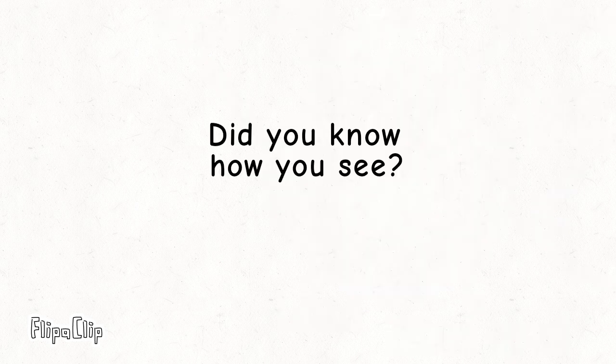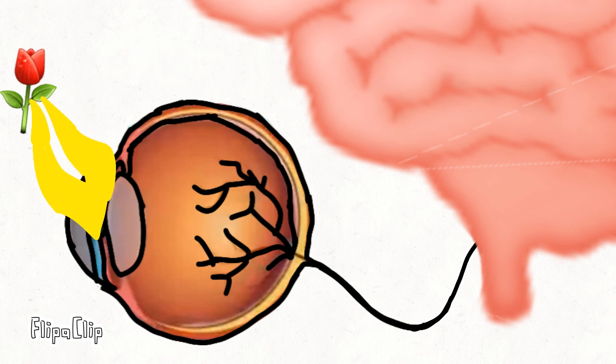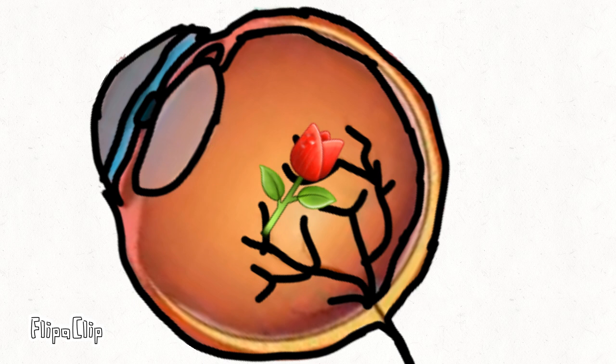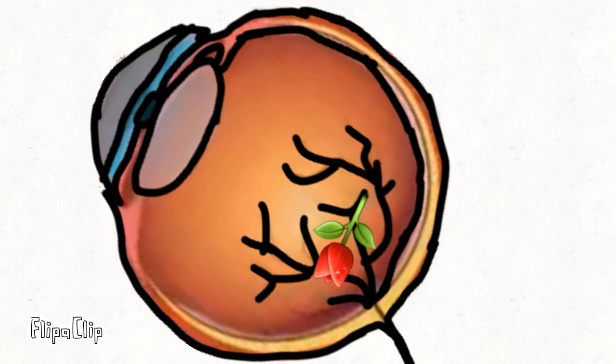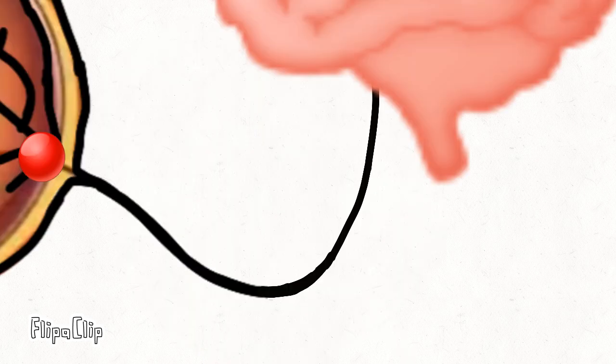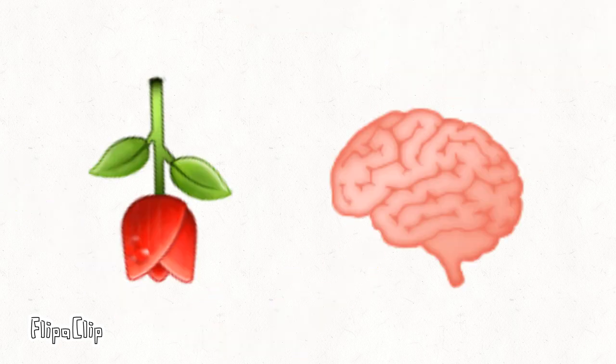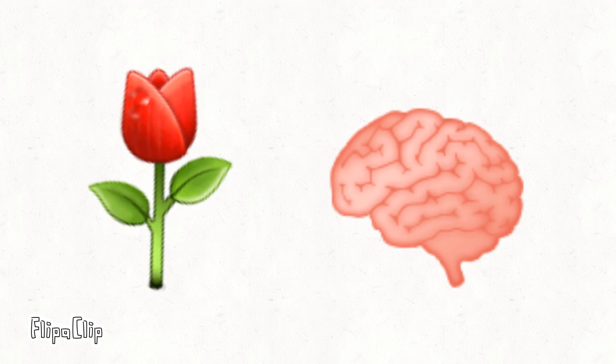Did you know how you see? Rays of light enter your eyes through your pupils. The lens can become fatter or thinner to make sure that a clear image lands on your retina. The light rays cross over and an upside down image forms on your retina at the back of your eyeball. Cells in the retina pick up the light rays. They send signals along the optic nerve to your brain. Your brain turns the image the right way up.